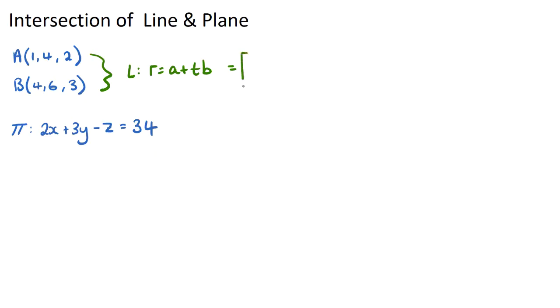So we can use the position vector of A, that's 1, 4, 2, plus T and our direction vector. Our direction vector will be the vector AB. Now AB will just be 4 minus 1, 6 minus 4, and 3 minus 2, so it'll be 3, 2, 1. Okay, so we've found our vector equation of the line passing through A and B.